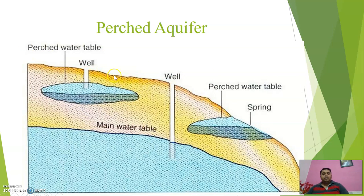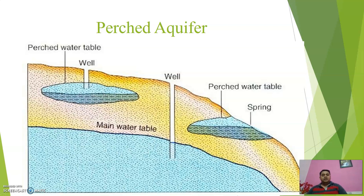Another term is perched aquifer. A perched aquifer is a locally available aquifer that is not the main aquifer. We can extract some water from it, but it is very limited and cannot serve as a good long-term water source. It forms where a local impermeable layer exists and a small local water table is present. The quality is not an issue, but the quantity is very less compared to the main aquifer.